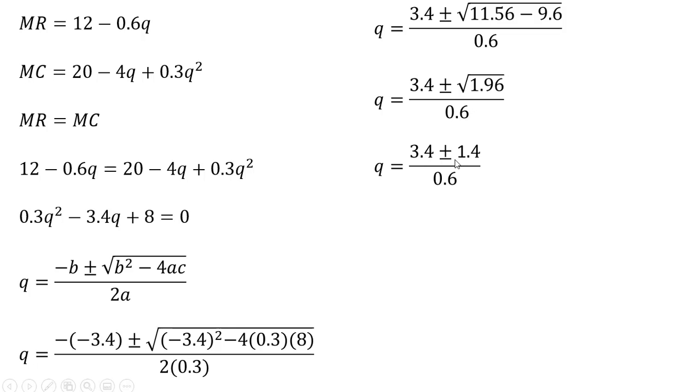The square root of 1.96 is 1.4, and we'll have two roots. 3.4 plus 1.4 is 4.8, divided by 0.6 is 8. The other root, which we're going to ignore, is 3.4 minus 1.4 equals 2, divided by 0.6 gives 3.33. We ignore this because it's the profit minimizing point, where profit is actually minimized at minus $21.48.